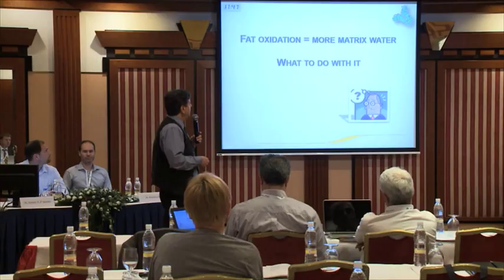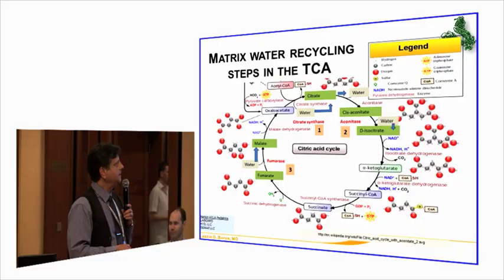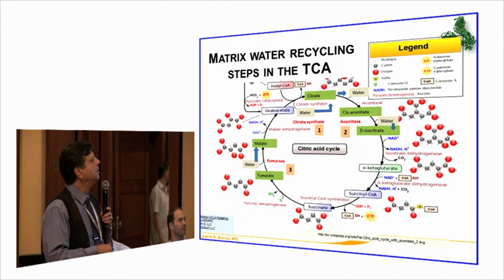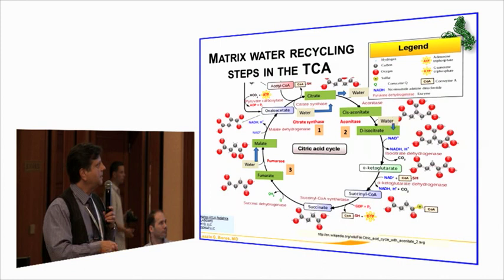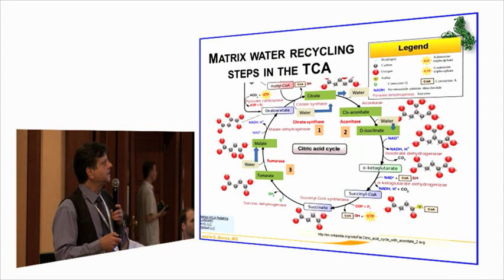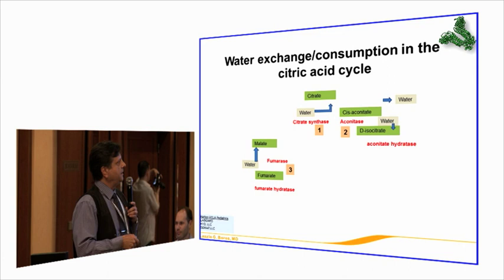Fat oxidation produces more matrix water, and we recycle it. That's one opportunity. Another curiosity is that while the TCA cycle turns over, there are three steps in the cycle which consume water. It's not only one recycling step but actually three steps of the TCA cycle that use and recycle metabolic water. One would be curious why water is so precious in mitochondria that matrix water has to be cycled at each cycle.